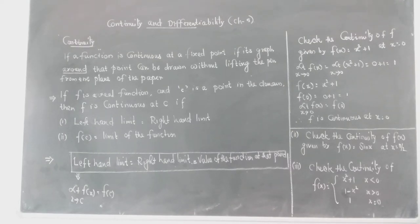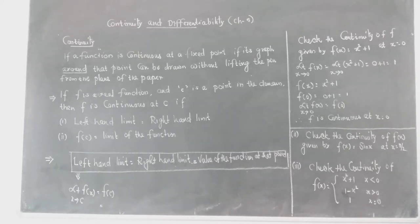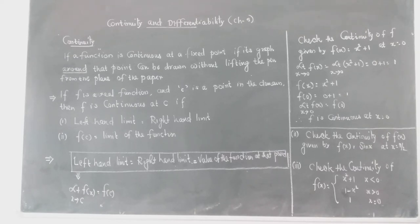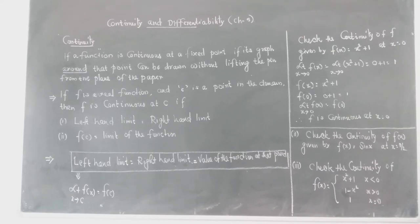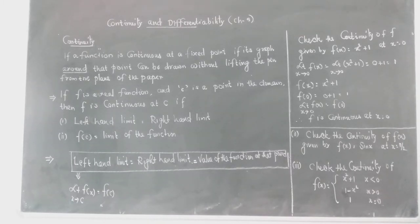We were studying last day regarding the identity of a function, and today we are moving forward. During the last class we have seen that a function is continuous only when we can draw its graph without lifting the pen from the surface of the paper, which means the graph is always continuous only when we can finish or sketch the graph in a single stretch.